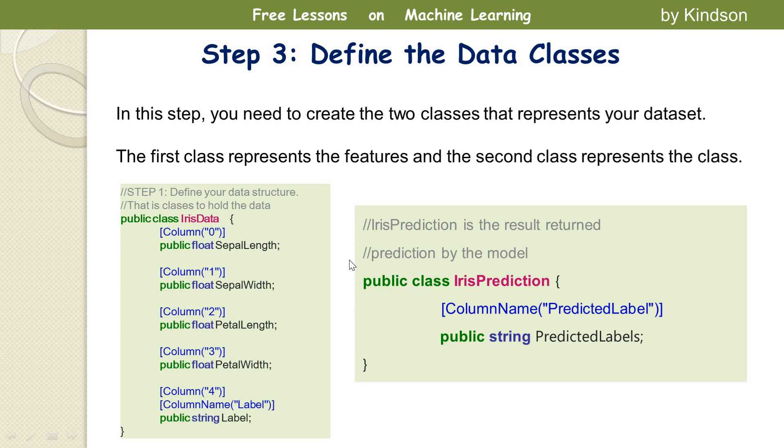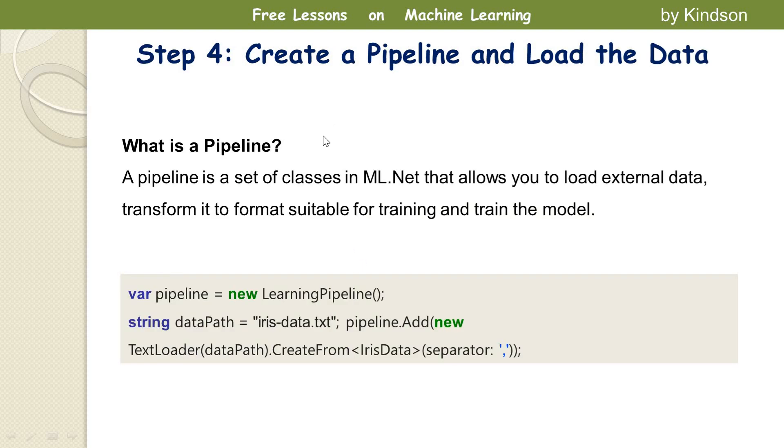The next thing is to create a pipeline. What is a pipeline? A pipeline is a set of classes in ML.NET. So a pipeline is a set of classes provided inside ML.NET that allow you to load external data, be the Excel sheet, CSV or text file, transform this data after loading, and then train the model.